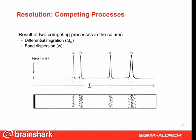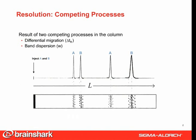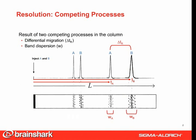It's important to understand that a chromatographic process is a result of two competing processes in the column: differential migration, which is good, and band dispersion, which is not good. This is a schematic of a separation.